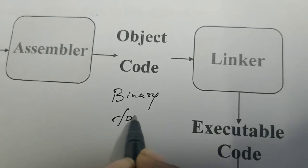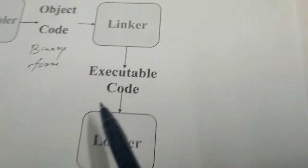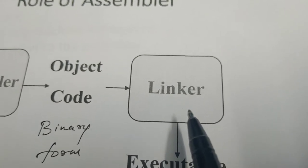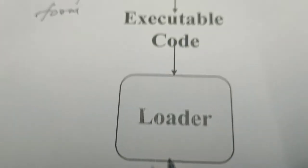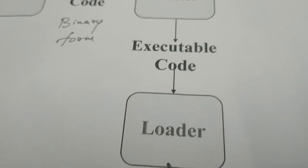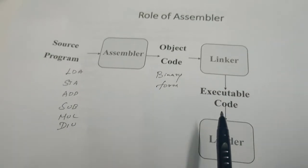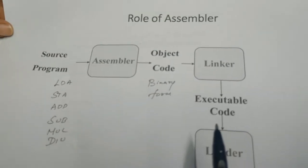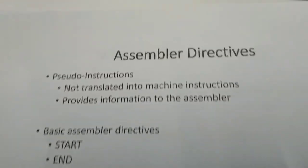After the assembler, there are two system software components: the loader and the linker. The linker links one or more object files and makes the program ready for execution. The loader loads the program from secondary memory into primary memory and allows it for execution. In short, the assembler translates assembly level language into machine level language — zeros and ones.